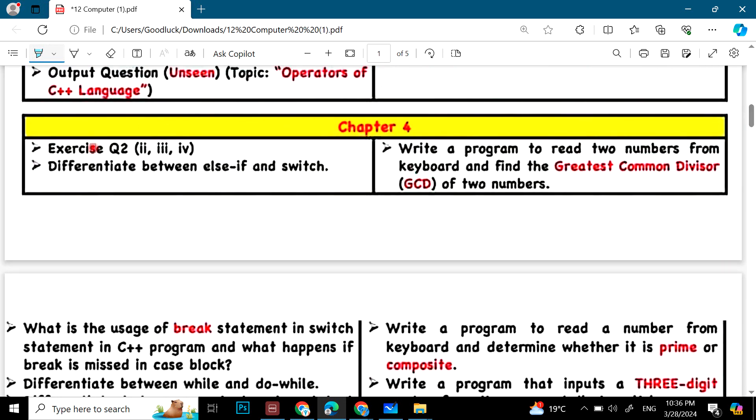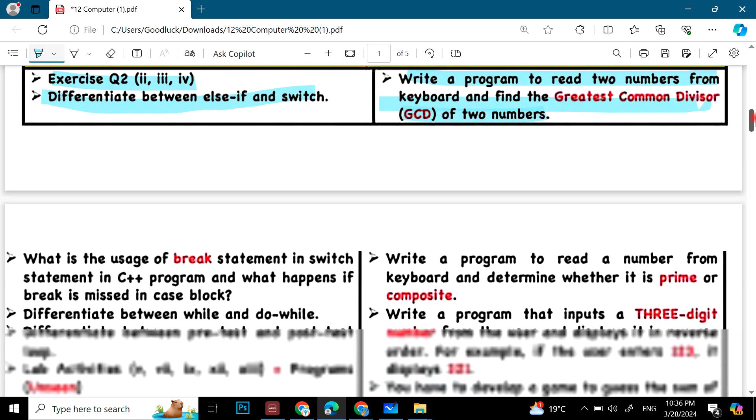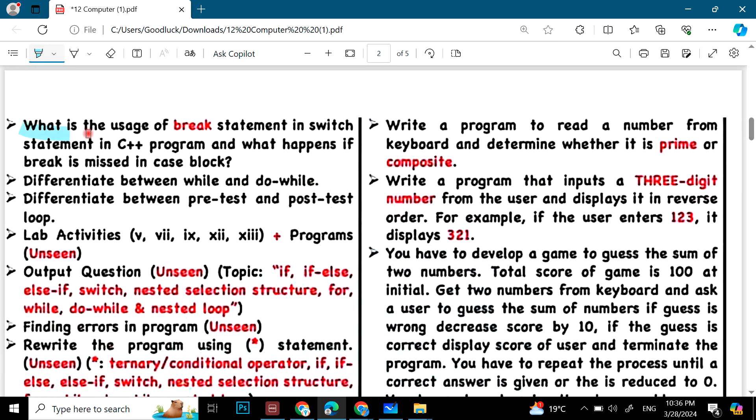Then chapter 4. Exercise question 2, part 2, 3 and 4. Differentiate between IF and SWITCH. Write a program to read two numbers from keyboard and find the greatest common divisor GCD of 2. What is the usage of BREAK statement in SWITCH statement? Differentiate between while and do while. Differentiate between pre-test and post-test loop.